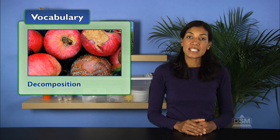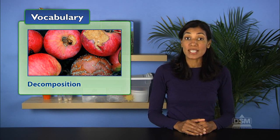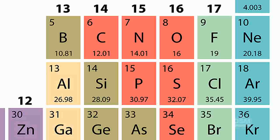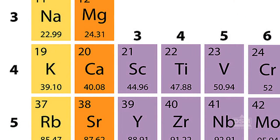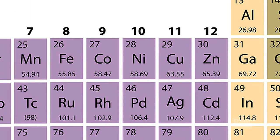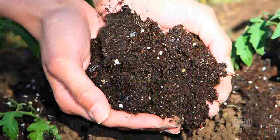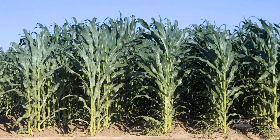Decomposers break down organic matter in dead plants and animals. Decomposition is important because it returns inorganic minerals such as carbon, nitrogen, phosphorus, potassium, calcium, iron, and zinc to the soil, and these nutrients enrich the soil. When these nutrients are taken up by a new organism, usually a plant, they begin their journey through yet another life cycle.